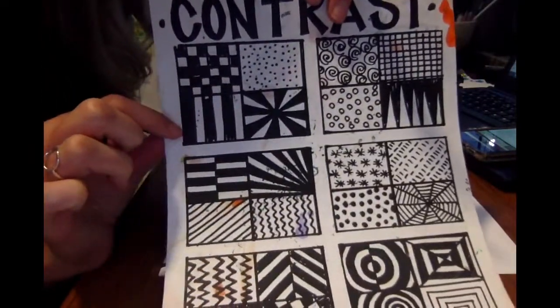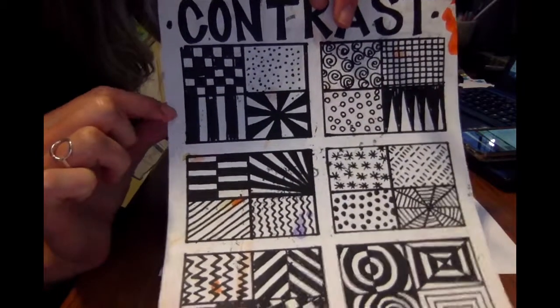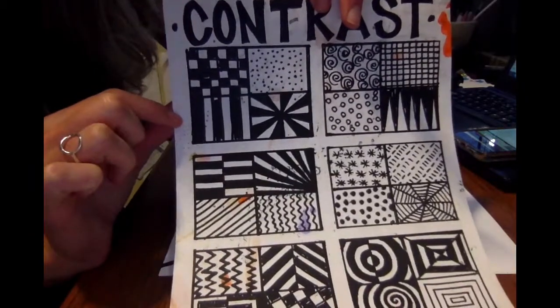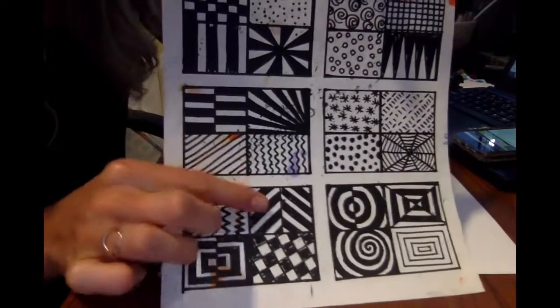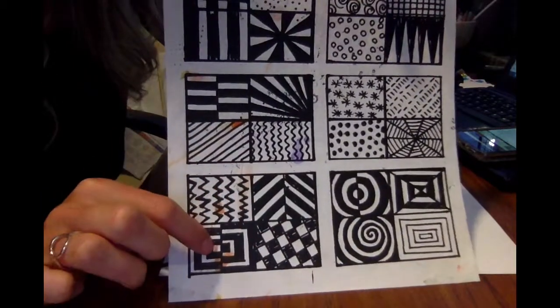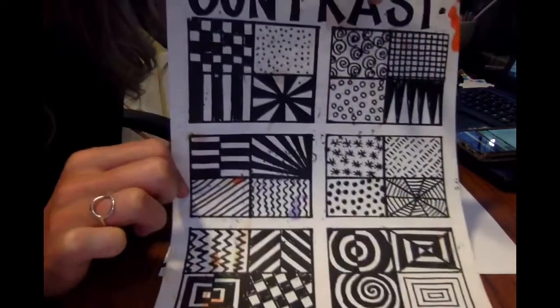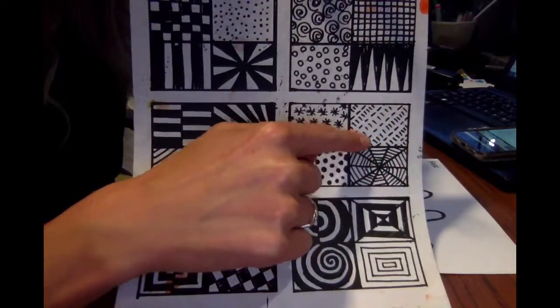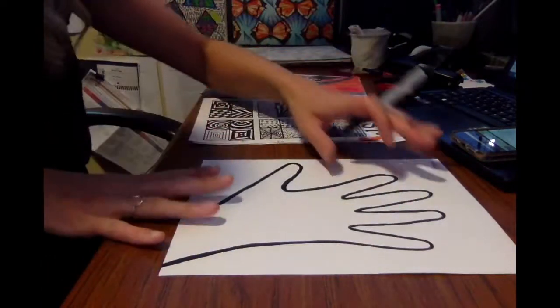Now for this project we're also going to add a little bit of contrast. So in this box you can see I did some stripes but in between the stripes I colored some of it in. Okay, the dark spots are going to help your project stand out more as opposed to just doing lines. So here's a couple of ways that you could make your designs a little bit darker and show contrast. Here's a cool one that looks kind of like a spider web.